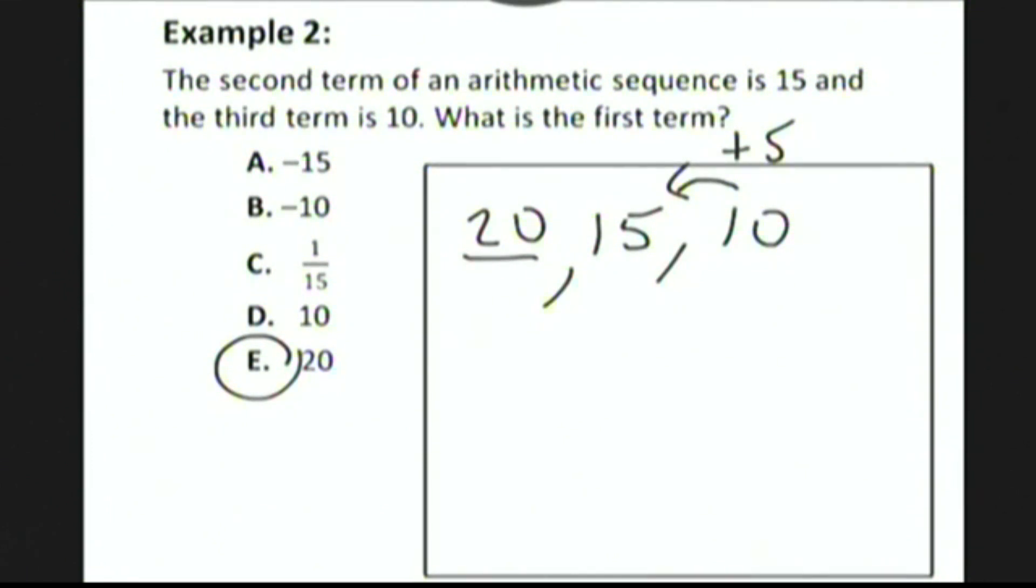So just note that in this particular example, the common difference is 10 minus 15, which is negative 5. A common mistake would be to say that the common difference here is 5.